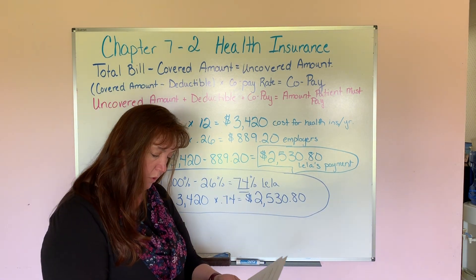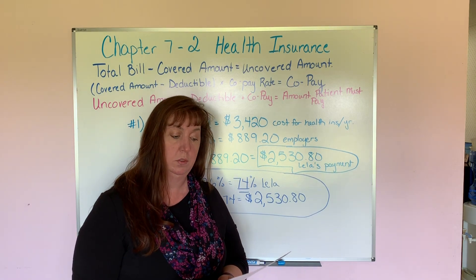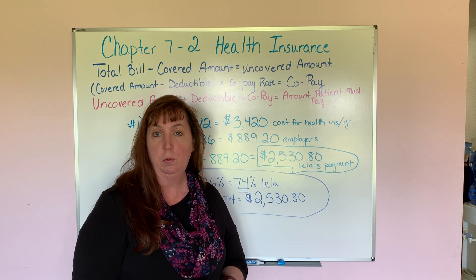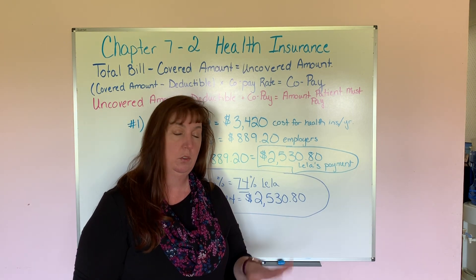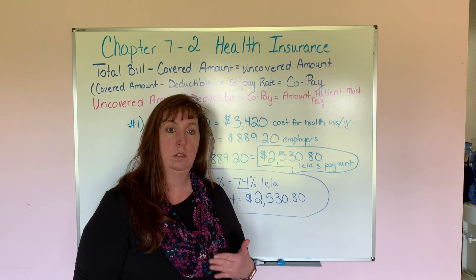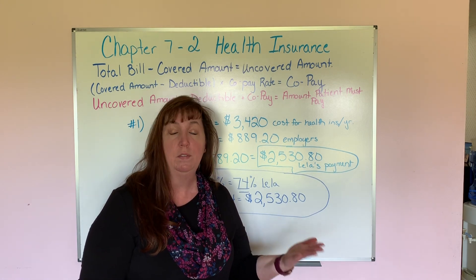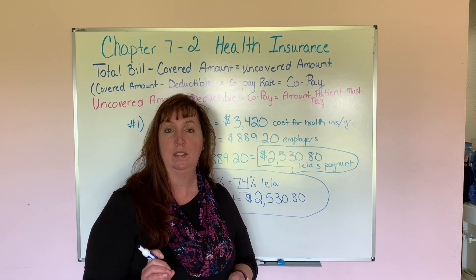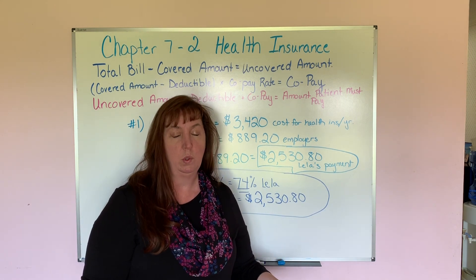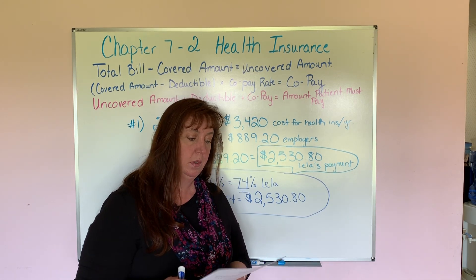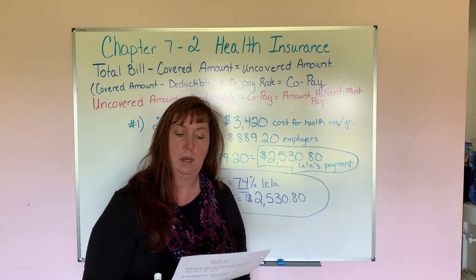Moving on to page eight in your packet: health insurance benefits and coinsurance. Annual deductible amounts — we've talked about deductibles before. The deductible has to be paid before the insurance company will start to pick up the bill. For example, many insurance companies set a deductible of $350 to $500 for emergency room visits to discourage unnecessary ER use and encourage you to go to your family doctor first. The annual deductible is the upfront amount the person must pay before the insurance company pays.